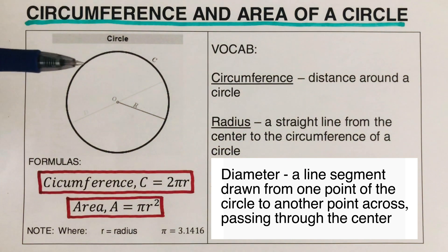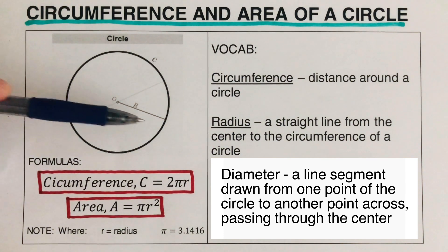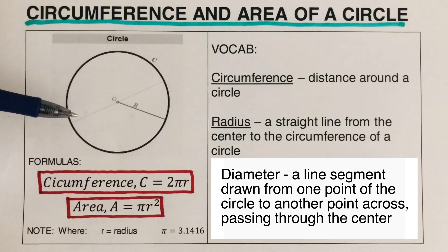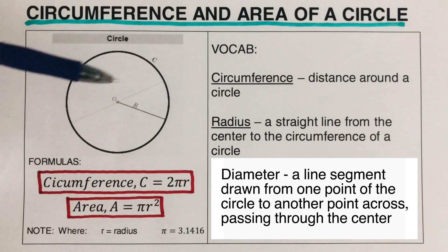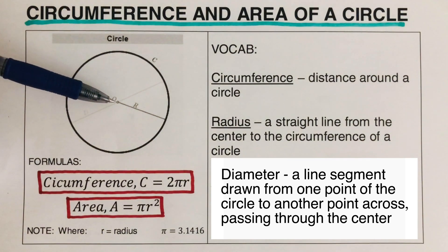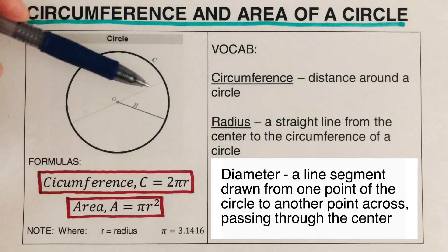Radius is a straight line that connects from the center to the side of the circle — I've labeled this as R. And then diameter is a straight line that connects from one side of the circle to the other side, passing through the center. Our center here is O, so this is the diameter.